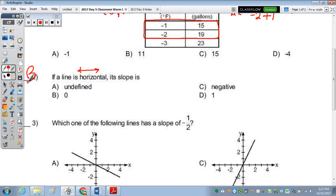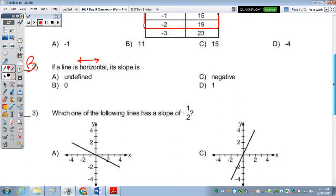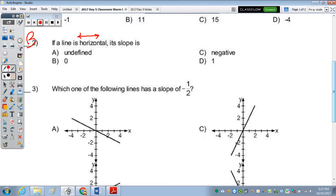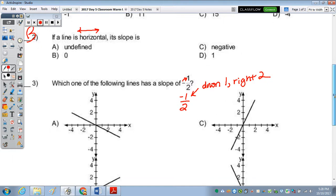Which one of the following lines has a slope of negative 1 half? So remember, a slope of negative 1 half, we move that negative up, so it's really negative 1 over 2. Which, because of the negative 1, it's going to go down 1, right 2.